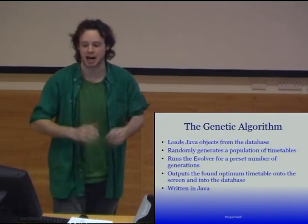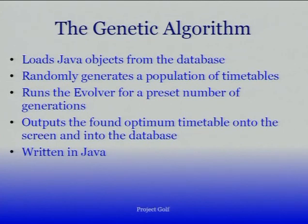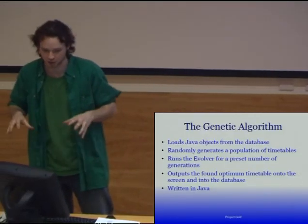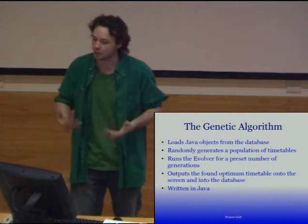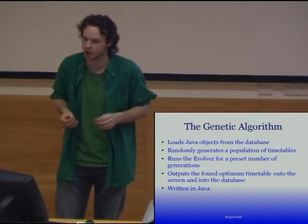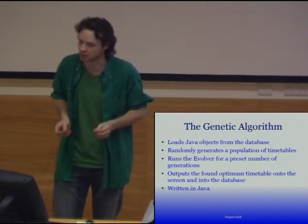The genetic algorithm has three main parts to it. The first part, the runner, loads Java objects from the database. It then randomly generates a population of timetables and then runs an evolver for a preset number of generations on this population. At the end, it outputs the found optimum timetable onto the screen and back into the database.